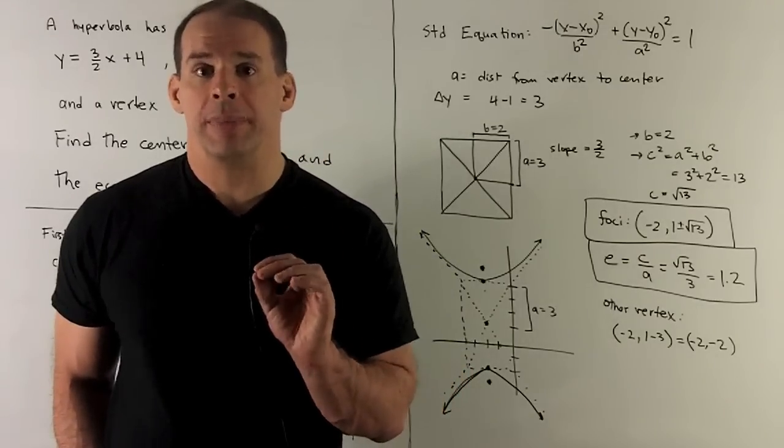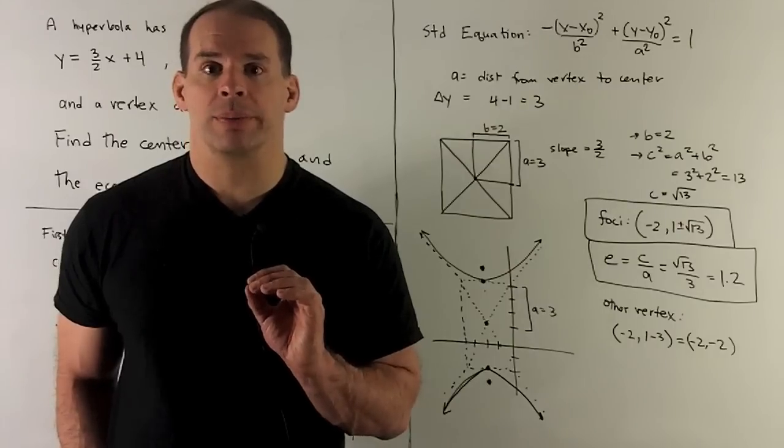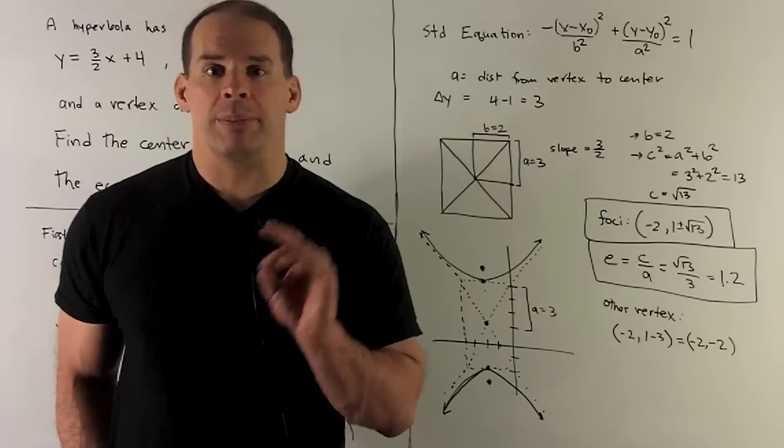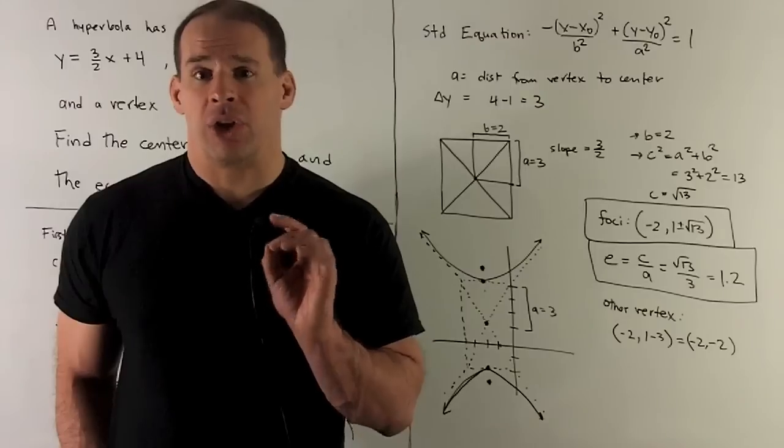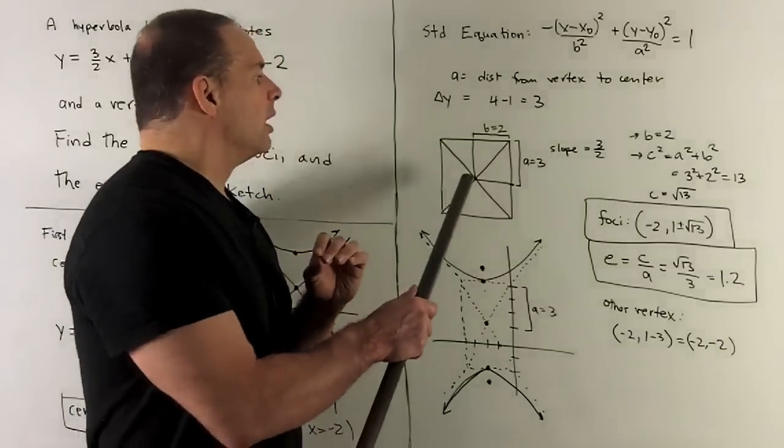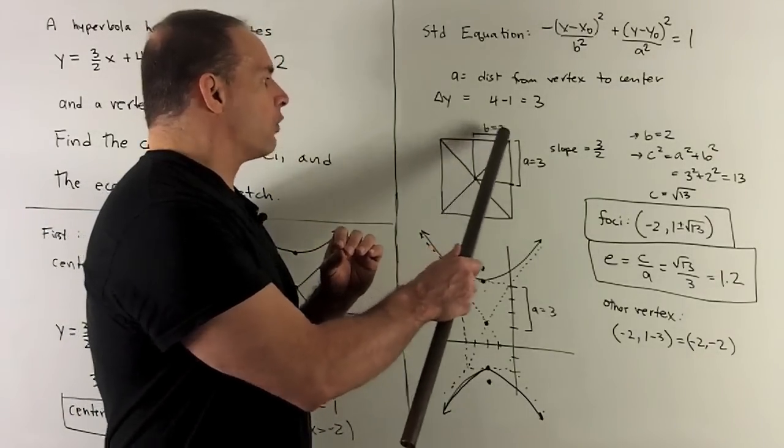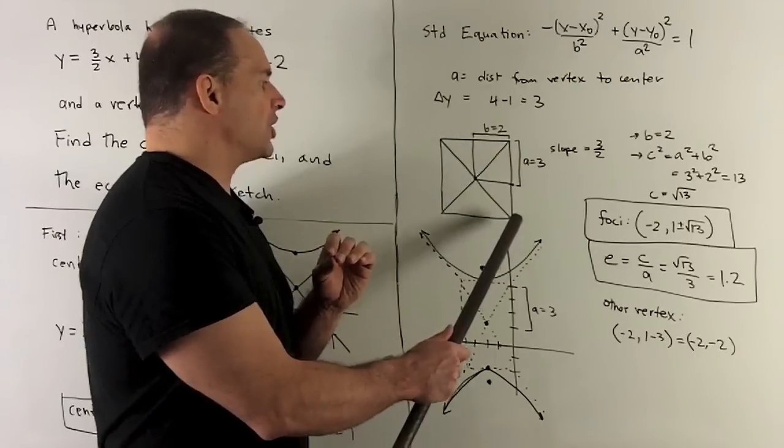How do I get b? Well, for b, we're going to have to take a closer look at the asymptotes. So if you have a and b, how do you find your asymptotes? What you're going to do is, in this case, go to your center. We're going to go up by a, over by b, and then do that in all four directions. That's going to give me a rectangle.